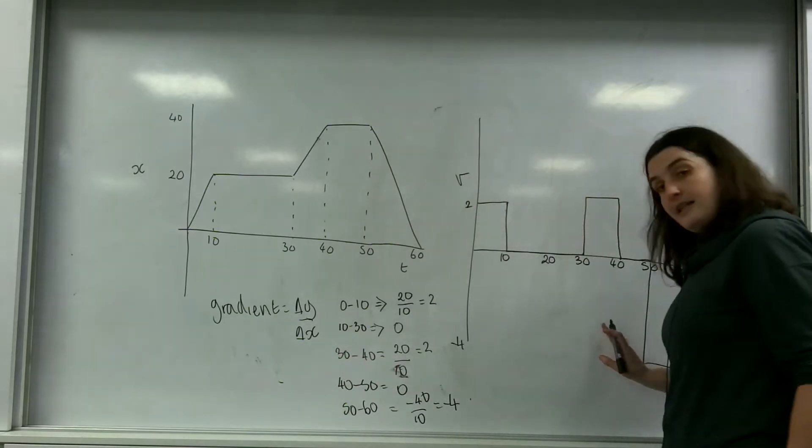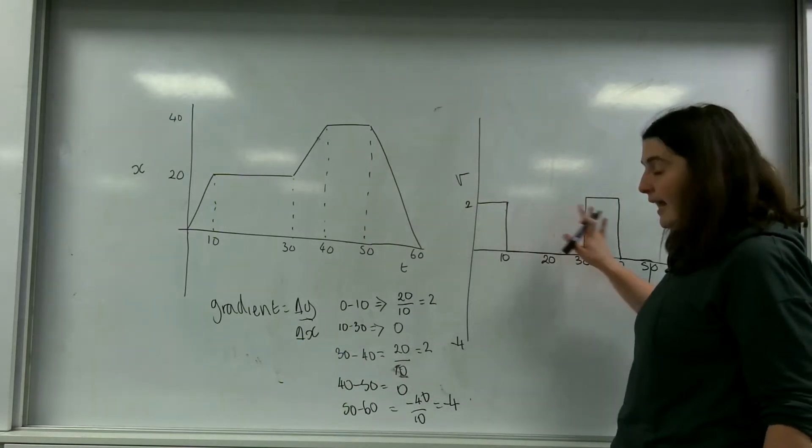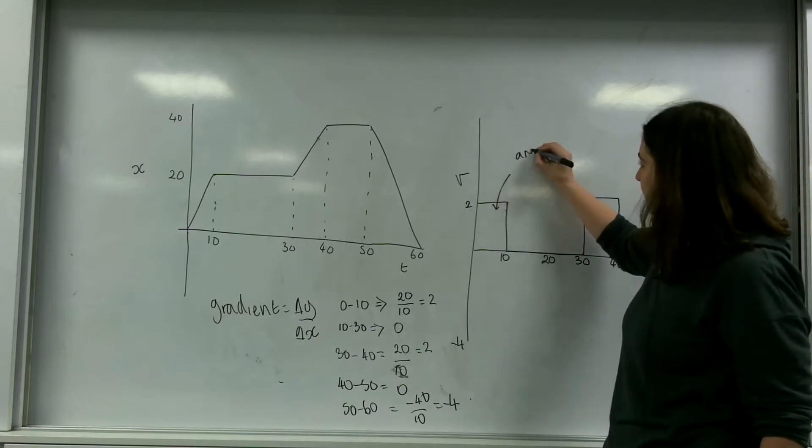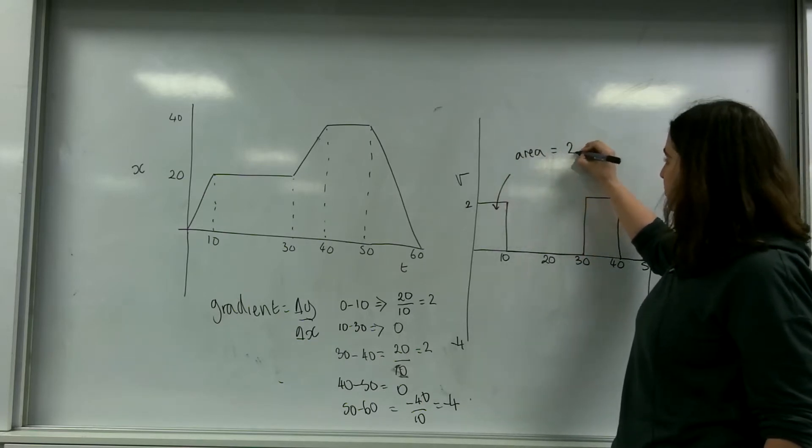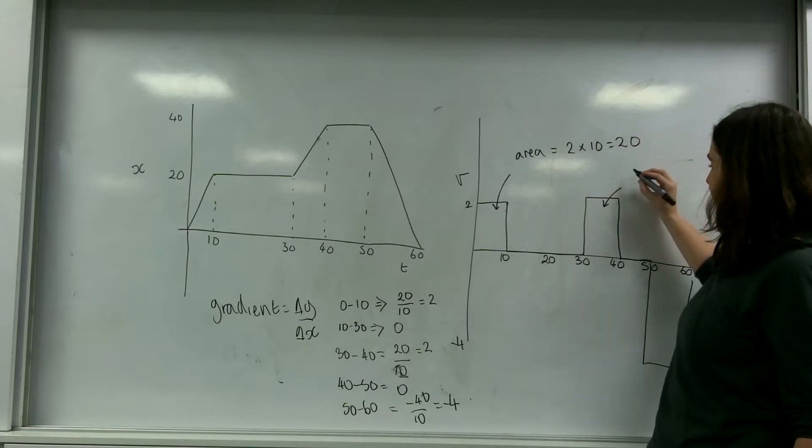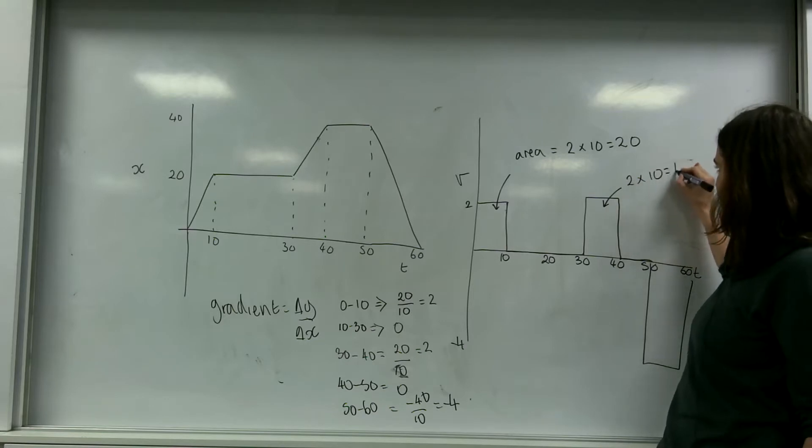And really interestingly, if I calculate the area of this graph, so the area of this is 2 times 10, which is 20. This one is 2 times 10, which is 20.